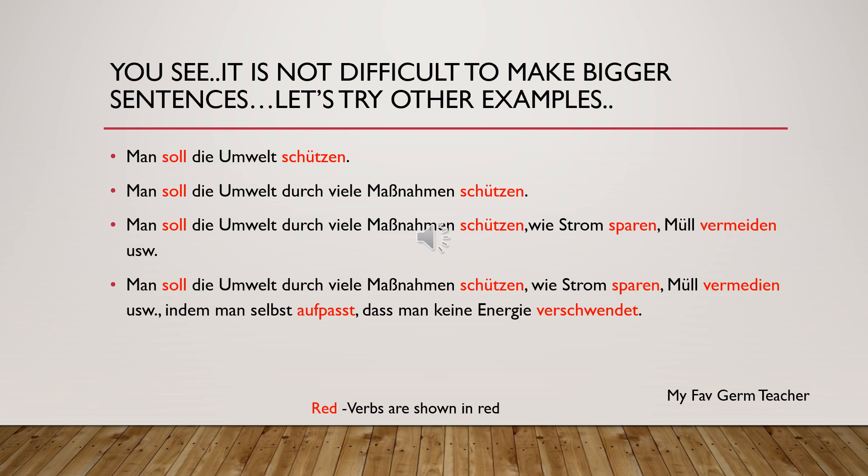The last sentence: 'Man soll die Umwelt durch viele Maßnahmen schützen, wie Strom sparen, Müll vermeiden, indem man selbst aufpasst, dass man keine Energie verschwenden.' This means a person should protect the environment through sparing electricity and avoiding waste, and through the process of — 'indem' means through the process of — being aware of himself, taking care of himself, that he does not waste energy.